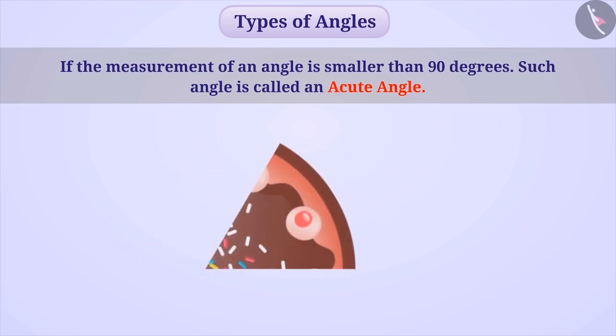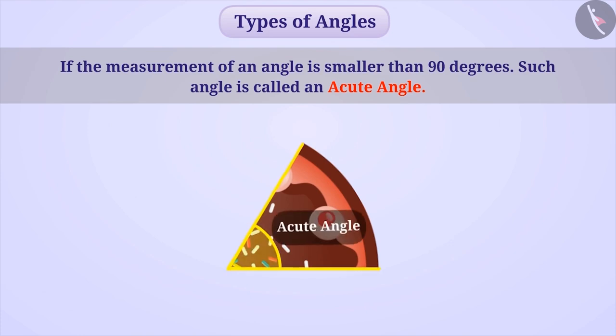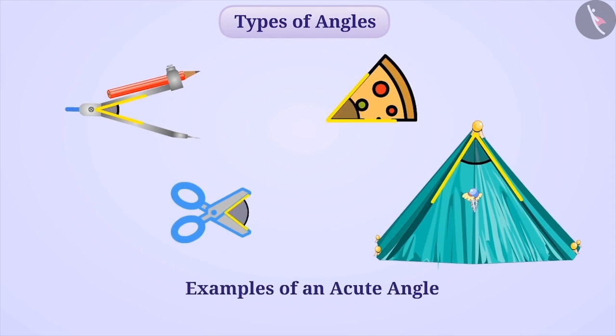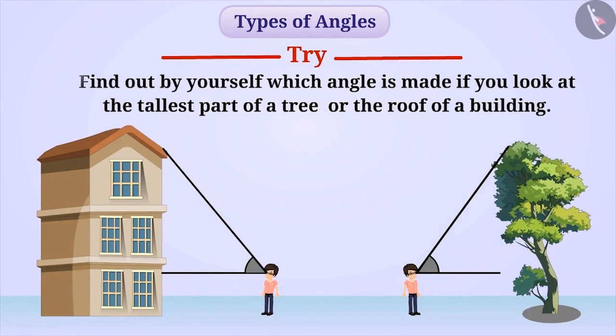For example, this piece of cake is forming an acute angle. Similarly, you can see acute angles in the displayed situations. Now try to find out by yourself which angle is made if you look at the tallest part of a tree or the roof of a building.